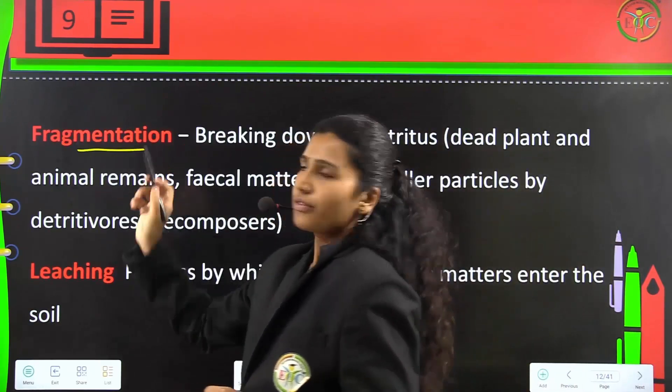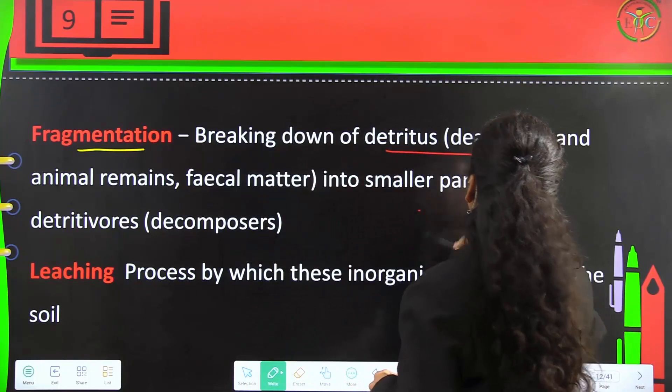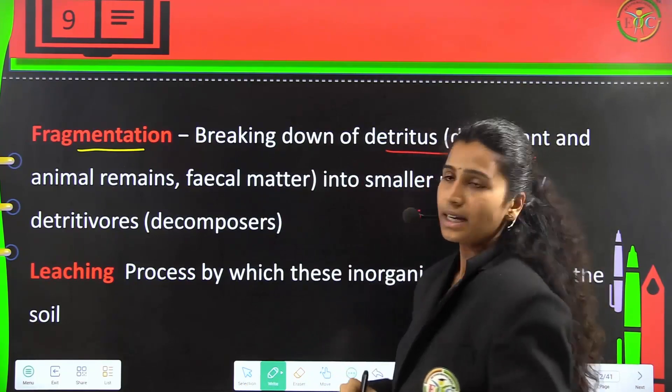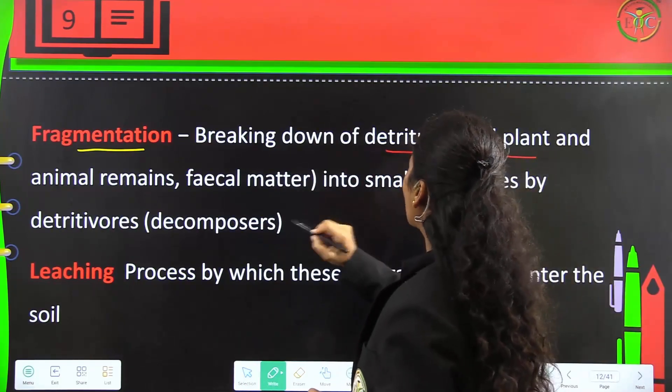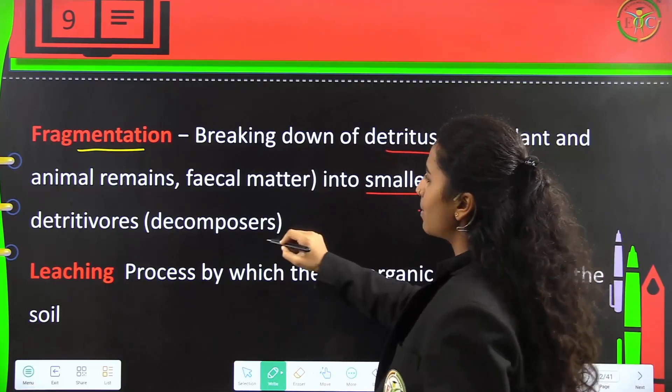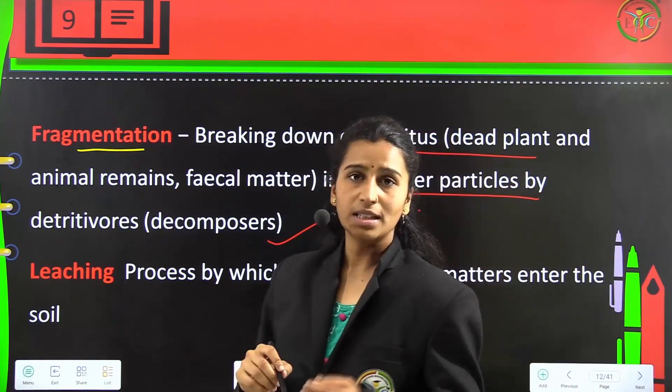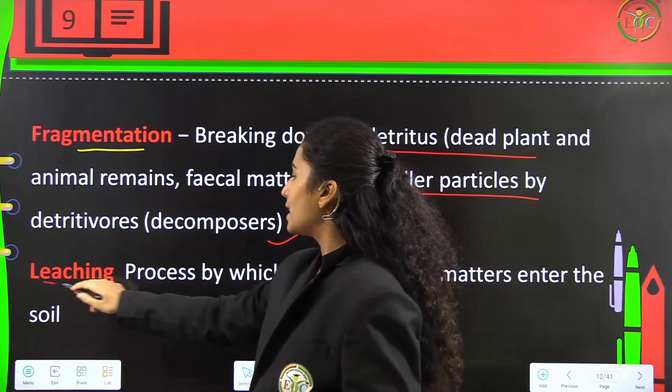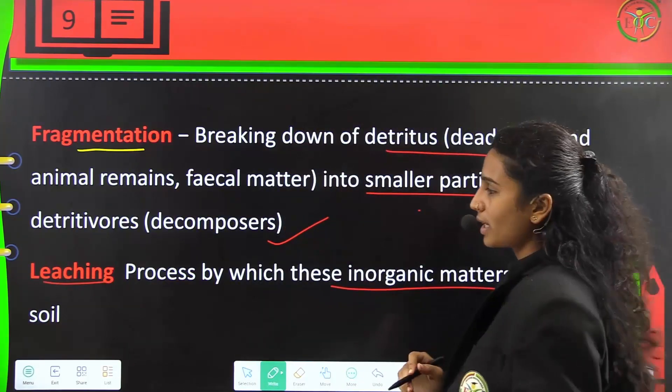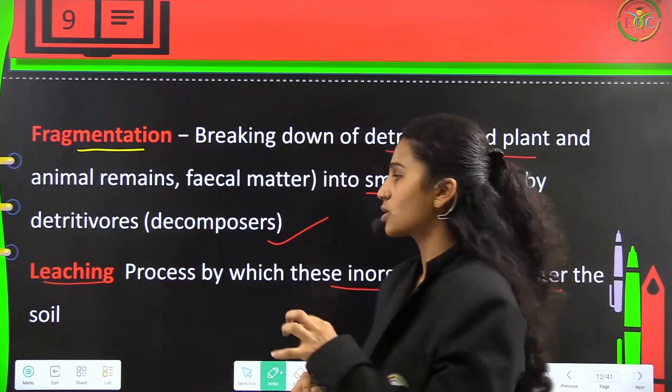Fragmentation is the breaking up of detritus (dead plant and animal remains or fecal matter) into smaller particles by decomposers. Leaching is a process by which inorganic matter enters into the soil.